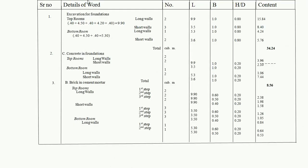The detailed estimate is done in two stages: the measurement sheet and the abstract sheet. Today we will complete the measurement sheet. The measurement sheet table has columns: serial number, details of work, number, length, width, height/depth, and total quantity.